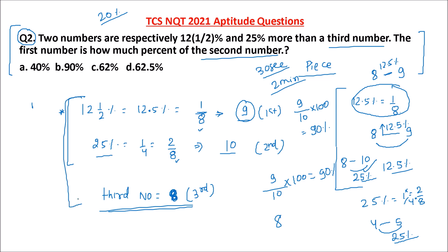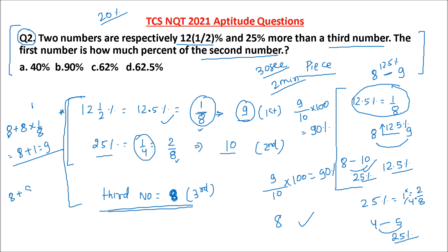I could have solved it directly but I wanted you to understand the concept. One more way: assume third number as 8. First number is 12.5% more than the third number — 12.5% is 1 by 8, so first number is 8 plus 1 part of 8, which is 9. Second number is 25% more — 25% is 1 by 4, so it is 10. However you feel comfortable, you can do it, but the concept should be there: how to assume and make the problem simple.